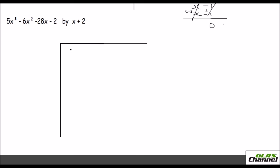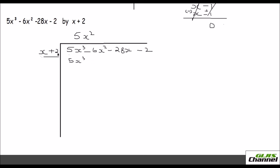Here your dividend is 5x cubed minus 6x squared minus 28x minus 2, and you are going to divide this by x plus 2. Now what should you multiply x by to get 5x cubed? You multiply x by 5x squared to get 5x cubed. So multiply the whole divisor by 5x squared: you get 5x cubed, and 5x squared times 2 gives plus 10x squared. Now we need to change the sign since you need to subtract. So this is cancelled, and you get minus 6x squared minus 10x squared, which is minus 16x squared.